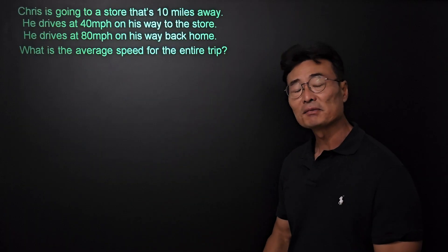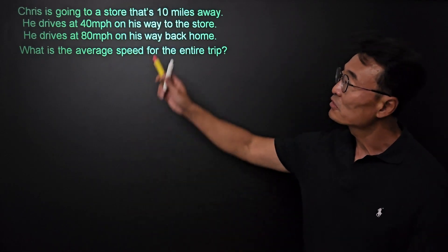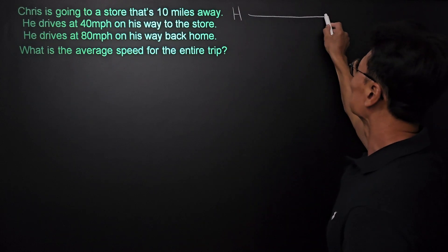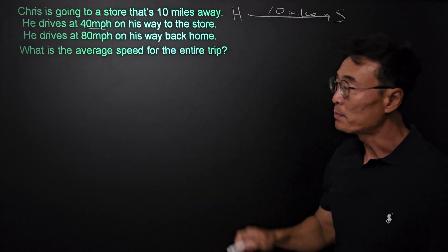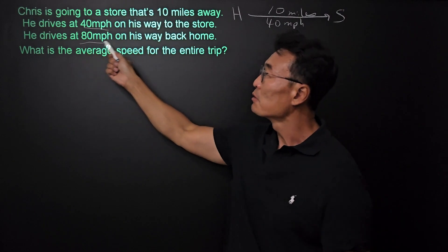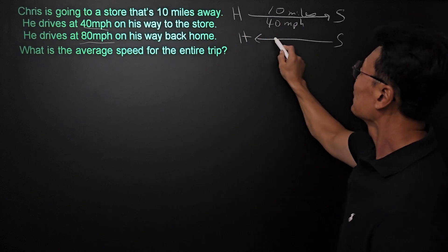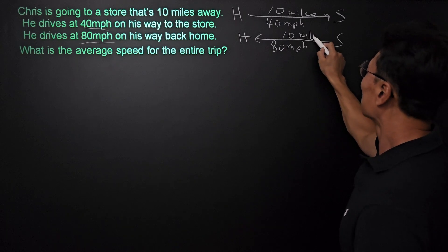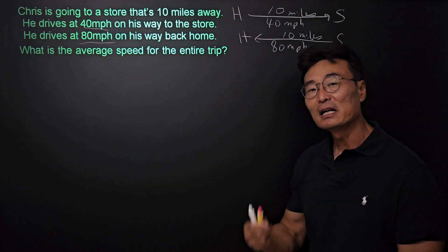Here's a word problem on speed that seems pretty straightforward. Chris is going to a store that's 10 miles away. Starting from home, Chris is driving to the store at 40 miles per hour. Next, he's coming back from the store to home at 80 miles per hour. The distance from the store back home is 10 miles as well. The question is: what's the average speed for the entire trip?